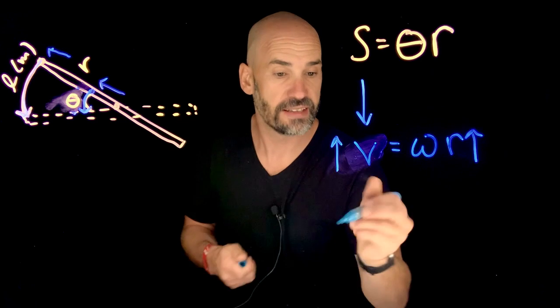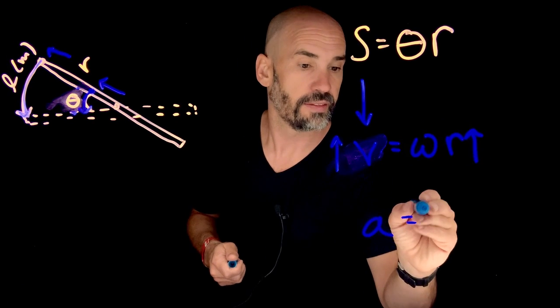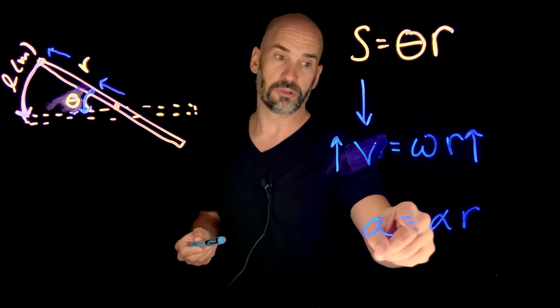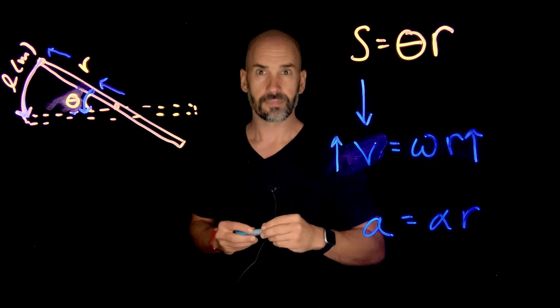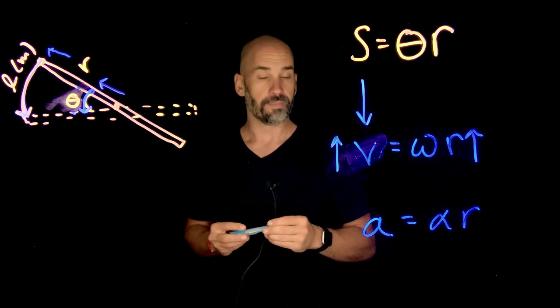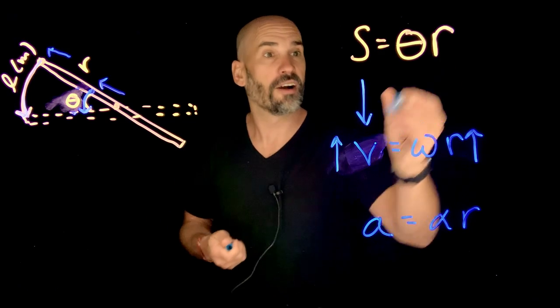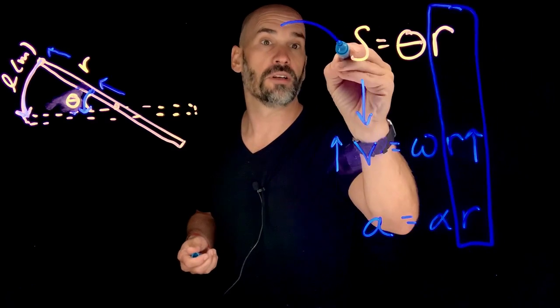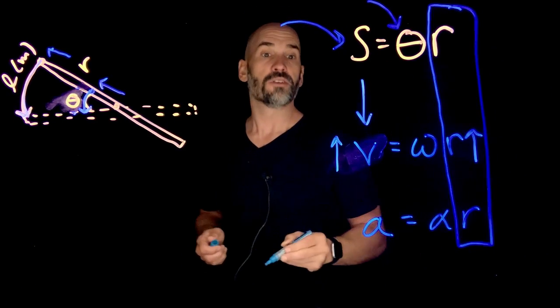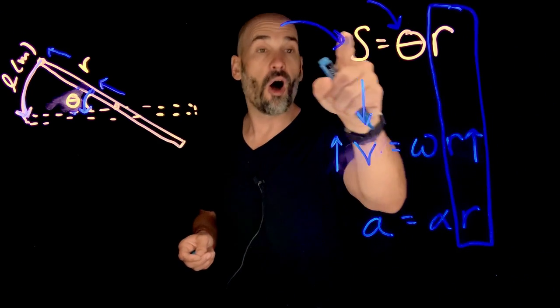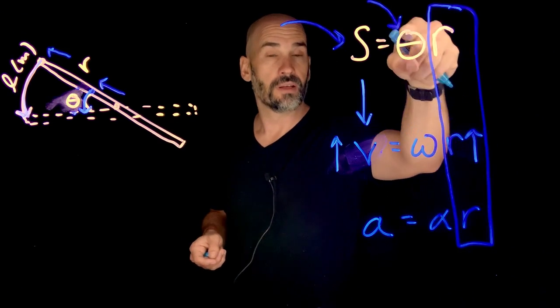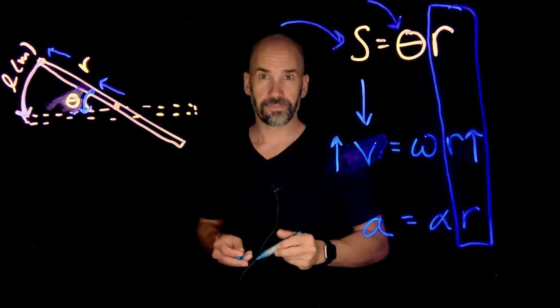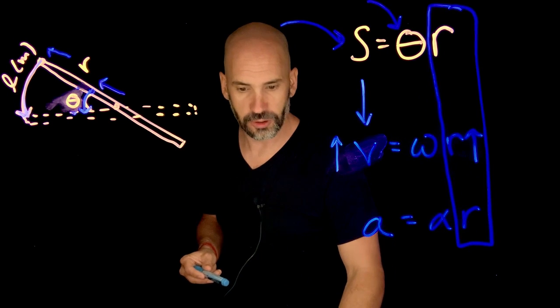And it's not much of a surprise that acceleration works the same way, that the linear acceleration is equal to the rotational acceleration times r. So basically, r here is the key to translating between the linear world and the rotational world. So if you take all of your rotational variables and multiply by r, you get back your linear variables. How does this work? Well, let's do an example.